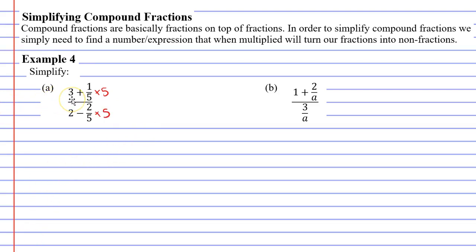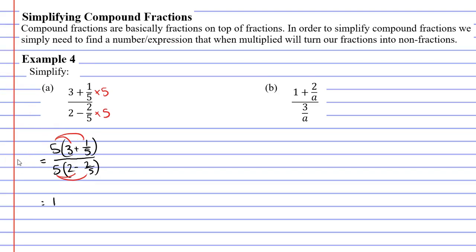Let's look at what happens when we do this. We'll start with our numerator, which is 3 plus 1 over 5, and we're multiplying this by 5. We have to multiply the whole expression by 5, so we need to put it in brackets. Expanding: 5 times 3 is 15, and 5 times 1 fifth gives us 1 — the 5s cancel each other out — so we get plus 1.